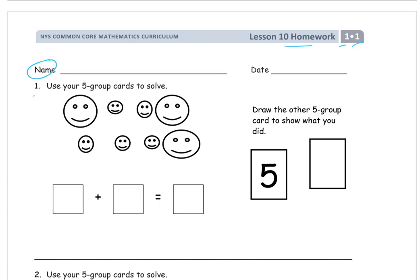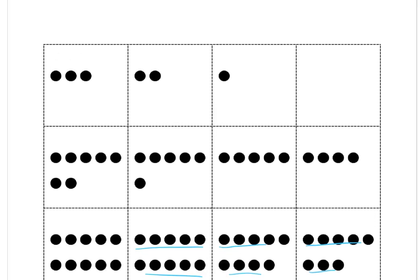Number 1, use your five group cards to solve. Now I'm going to hold on a second, I'll show you a picture of the five group cards so you can see what they look like. Five group cards look like this. They're groups of cards in five group rows. Now this picture of the five group cards, this is a cutout from all the way back in Lesson 5.